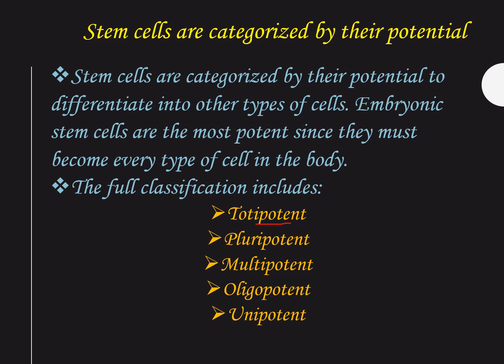Next comes pluripotent cells. Pluripotent refers to the ability of a cell to differentiate into all these cell types. Examples include embryonic stem cells and cells derived from mesoderm, endoderm, and ectoderm germ layers that are formed in the beginning stage of embryonic stem cell differentiation. Next are multipotent cells, which have the ability to differentiate into a closely related family of cells.